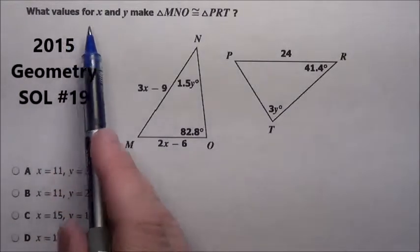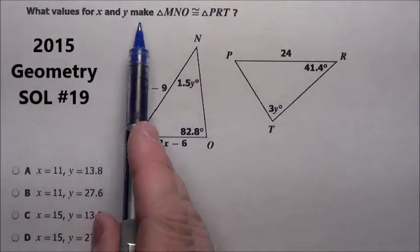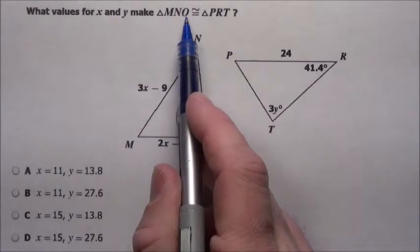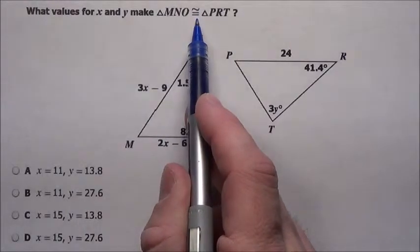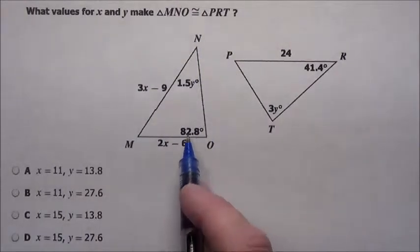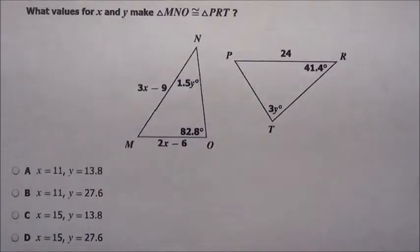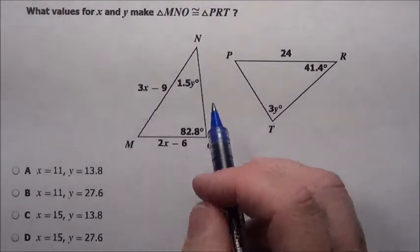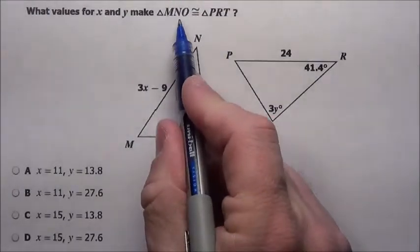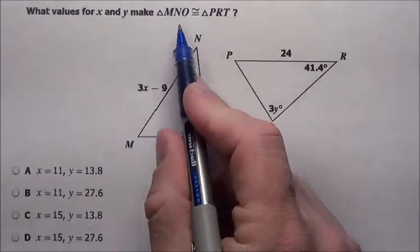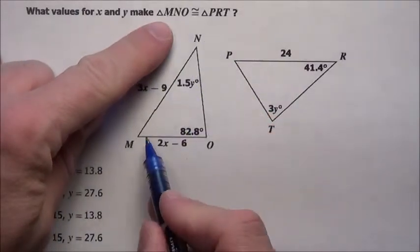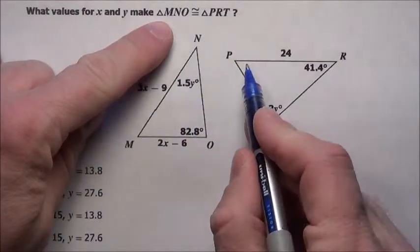Problem 19. What values for x and y make triangle MNO congruent to triangle PRT? It has all these numbers in here. Let's look at this first. It says MNO, so I know M has got to match P, so this M has got to match P.